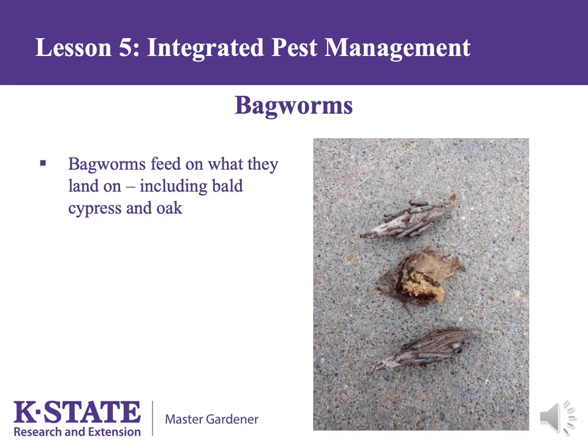Bagworms are most often found on junipers but will feed on whatever they land on, including bald cypress and oaks. The appearance of the bag varies, as these insects use portions of foliage to stick to the outside of their bags.